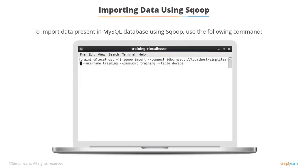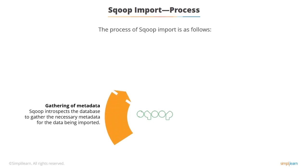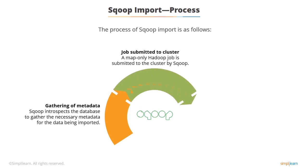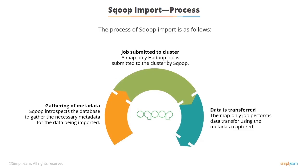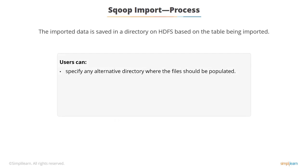Use the command shown to import data present in a MySQL database using Sqoop, where 'simplylearn' is the database name and 'device' is the table name. Sqoop introspects the database to gather the necessary metadata for the data being imported. A map-only Hadoop job is submitted to the cluster by Sqoop. The map-only job performs data transfer using the metadata captured in Step 1. The imported data is saved in a directory on HDFS based on the table being imported.